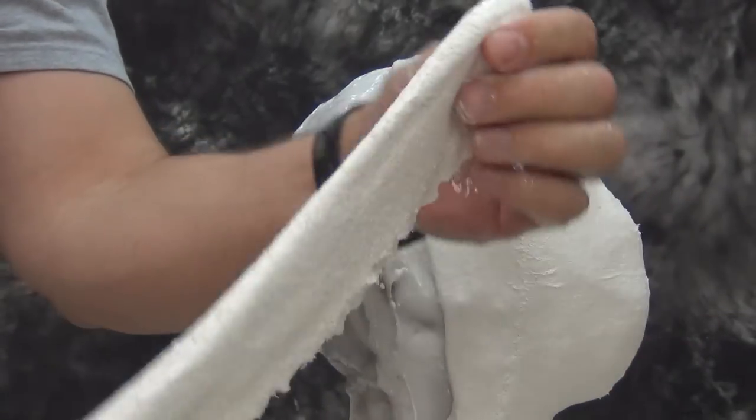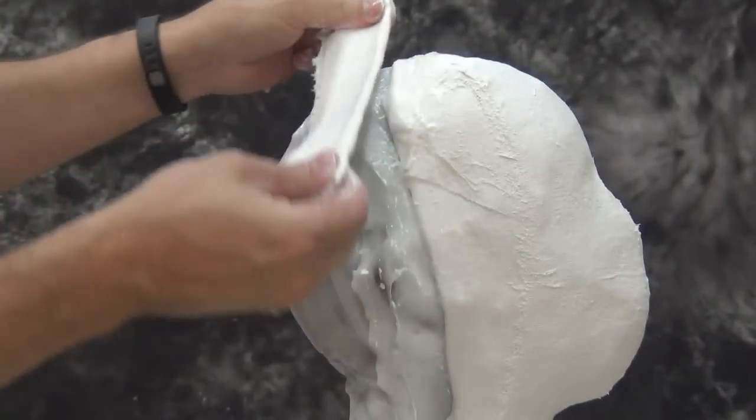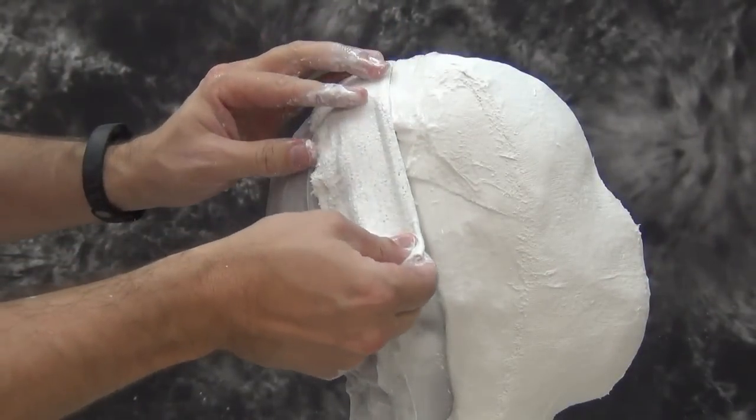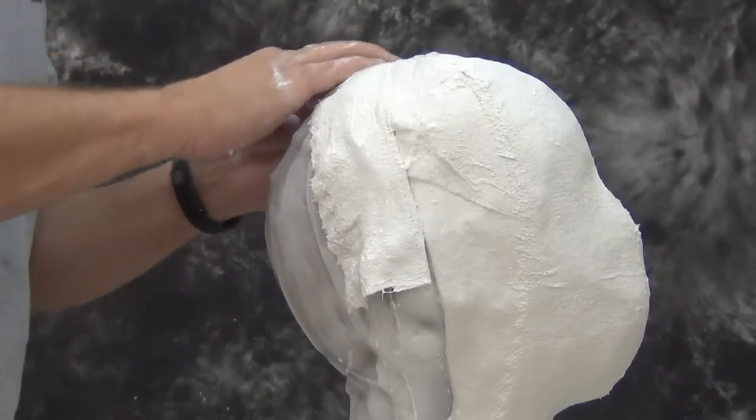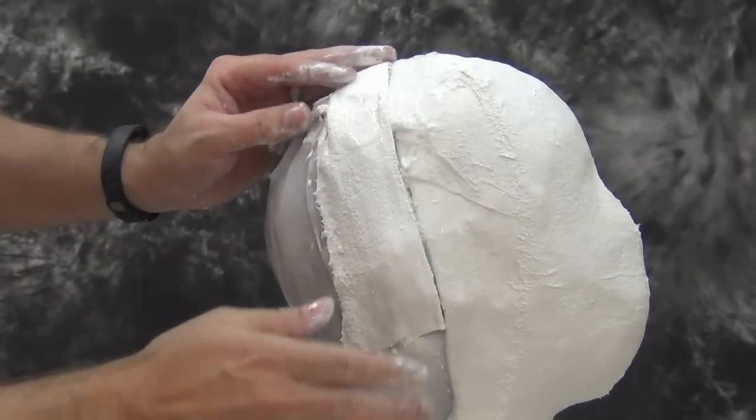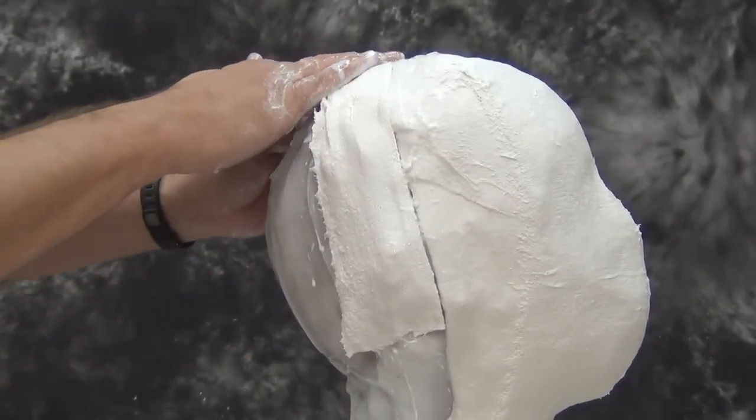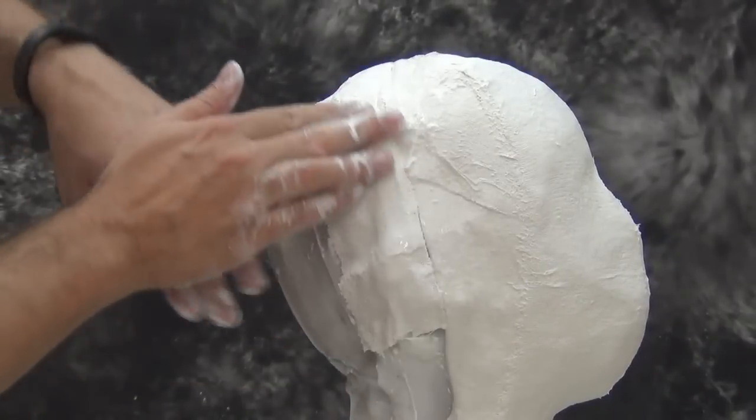Once we've applied that, we're ready to build a seam for the second half of the mold. Just like the first, we want to fold those bandages lengthwise to create a very nice defined edge that doesn't have any frayed areas. I like to push that right up against that released edge. That's why it's so important to get that first side released properly, because we want to push that right up against it.